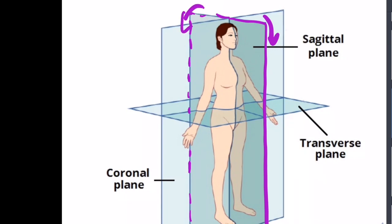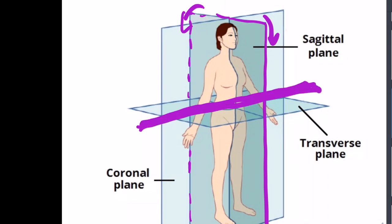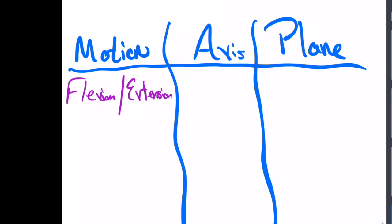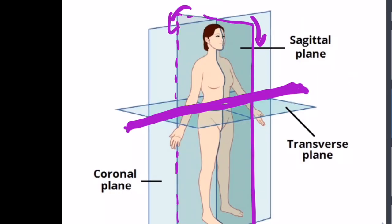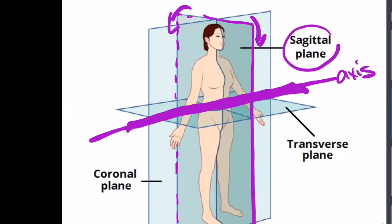When we're talking about axis, what we mean is what is the motion moving around — not what is the direction of the motion, but what is the motion moving around. In this case, if we put a bar straight down the middle and then we have flexion or extension, we know that this person is moving around this bar. Flexion and extension move around a transverse axis in a sagittal plane. We can see this is moving around a transverse axis right here, and it's moving in the direction of a sagittal plane.